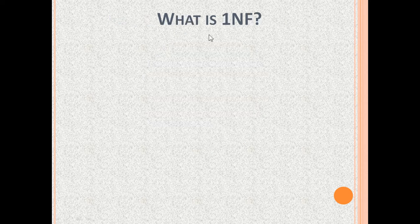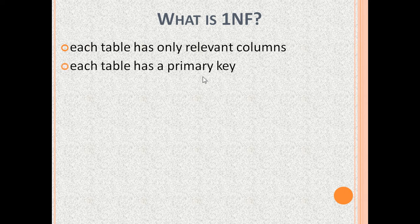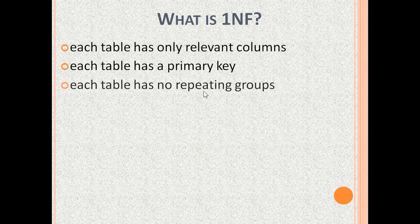What is 1NF? First normal form means that each table has only columns relevant to that table. Each table has a primary key — a value that is unique in every row of a table. Each table has no repeating groups.